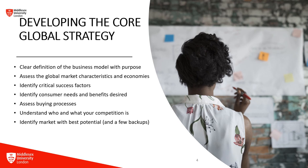The seventh aspect is identifying markets with best potential and having a few backups. This involves evaluating factors such as market attractiveness, growth prospects, competitive intensity and regulatory risks, and prioritizing markets based on size, growth potential, accessibility and alignment with organizational capabilities. Developing backup plans and contingencies for alternative markets provides flexibility and resilience in the face of changing market conditions or unexpected challenges. Developing the core global strategy requires a systematic approach to understanding market dynamics, consumer needs, competitive landscape and critical success factors.